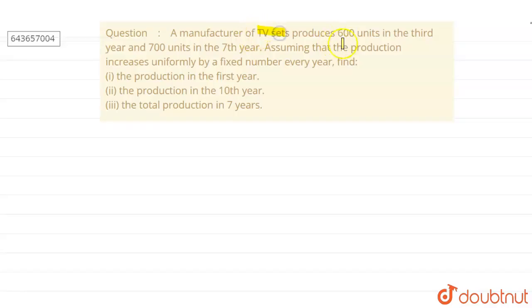A manufacturer of TV sets. In this question we have a manufacturer of TV sets produces 600 units in the third year and 700 units in the seventh year.